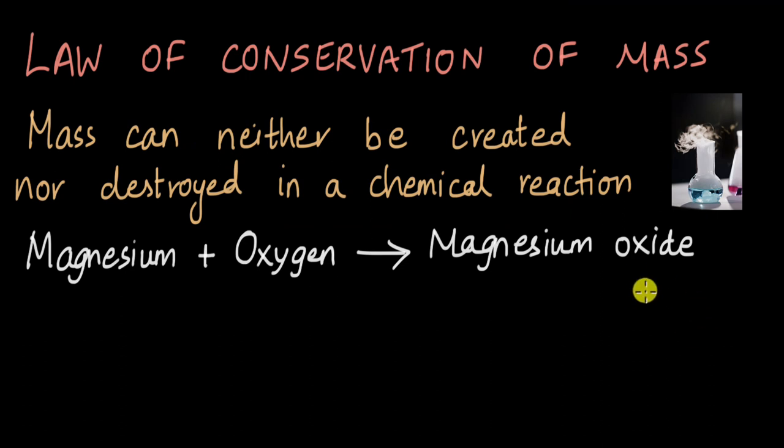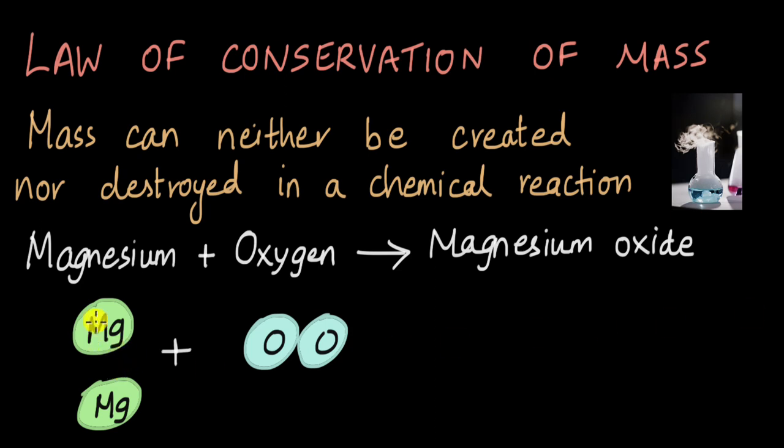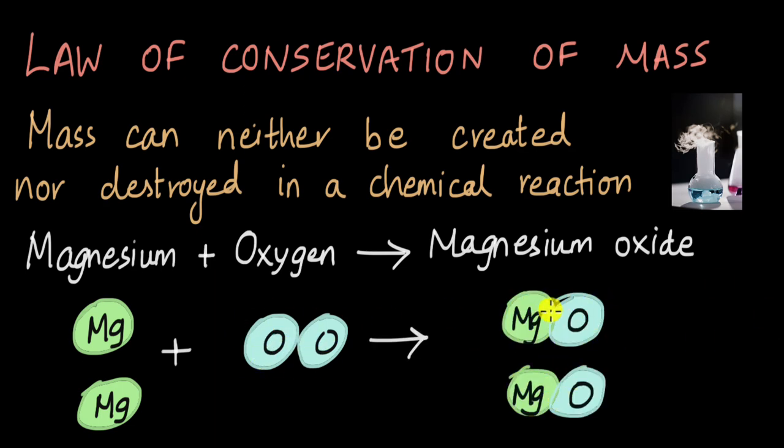We can represent this reaction in the form of atoms. So let's say we have two atoms of magnesium. They will react with one molecule of oxygen, which already has two atoms of oxygen, and then it forms two compounds of magnesium oxide. Now you can see that no atoms were created or destroyed in this reaction.